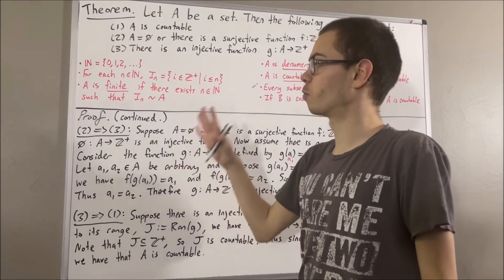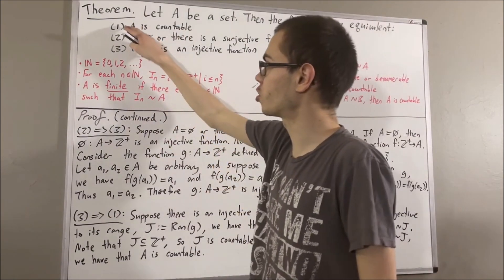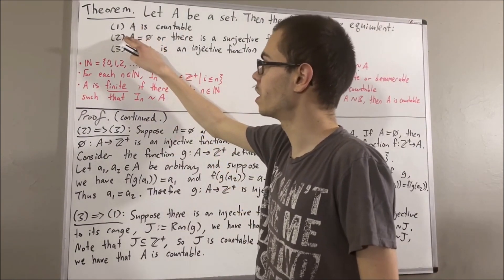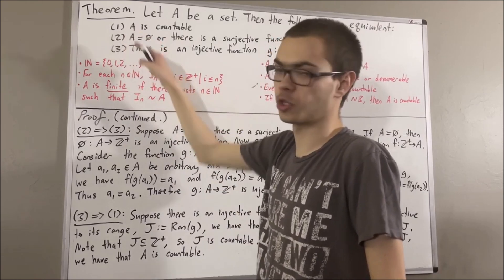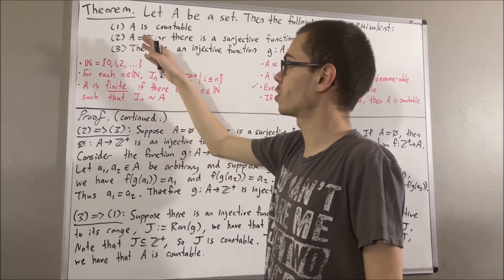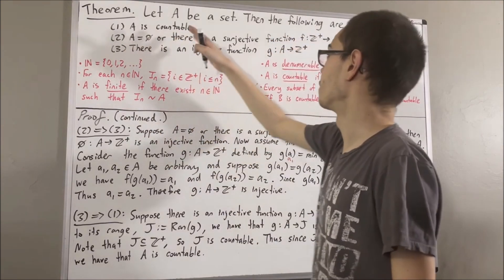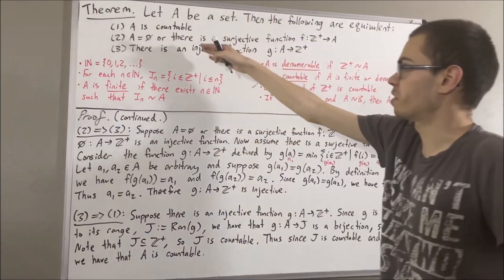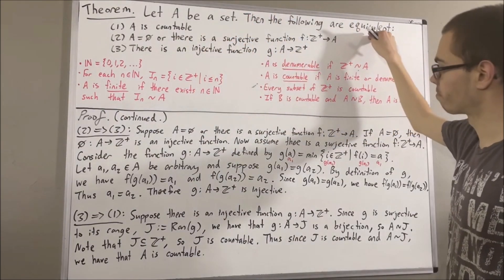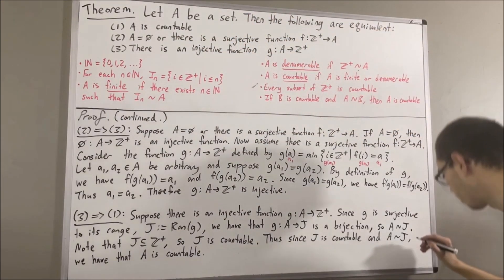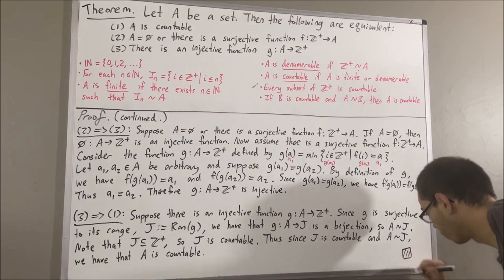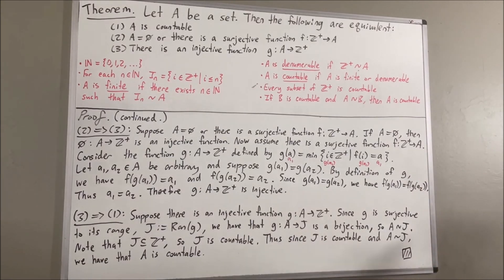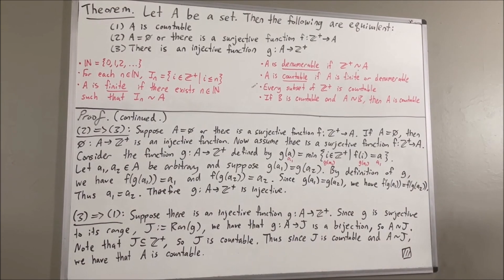We've shown if 1 is true then 2 is true, if 2 is true then 3 is true, and if 3 is true then 1 is true. That tells us we've proven that all three of these statements are equivalent, and this completes the proof.